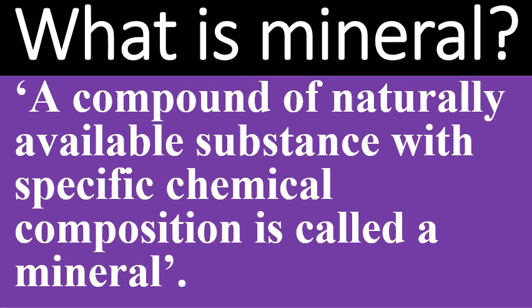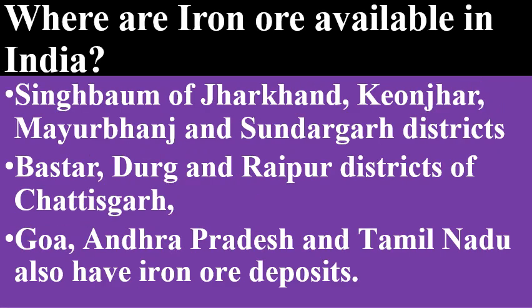What is a mineral? A compound of naturally available substance with specific chemical components is called a mineral. There is chemical composition in them. Where are iron ore deposits available in India? Singhbhum of Jharkhand, Keonjhar, Mayurbhanj and Sundargarh districts, Bastar, Durg and Raipur districts of Chhattisgarh, Goa, Andhra Pradesh and Tamil Nadu all have iron deposits.